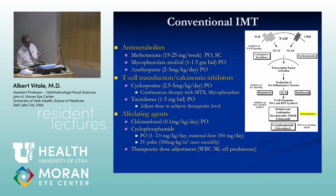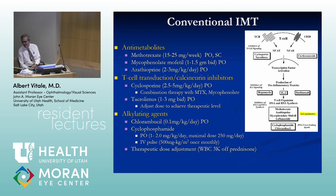These agents are useful in certain disease states in inducing remission. The alkylating agents are the only ones that really do induce remission. For patients with Behcet's disease, remission induction has been shown with chlorambucil and cyclophosphamide. For patients with necrotizing scleritis associated with ANCA-positive disease, we do have rituximab, and chlorambucil and cyclophosphamide have been shown to induce remission.